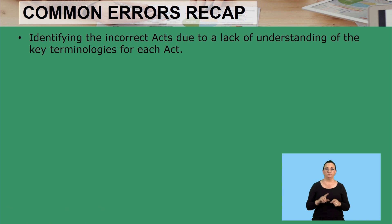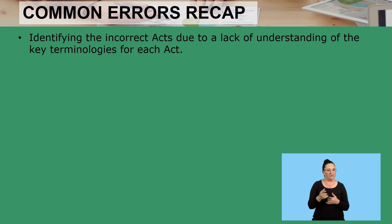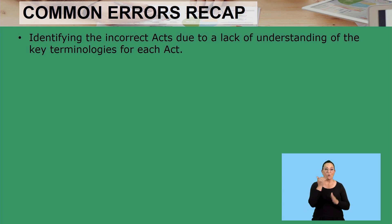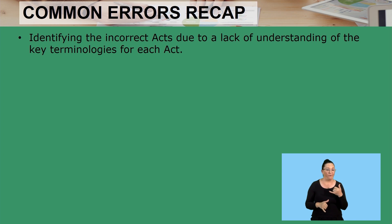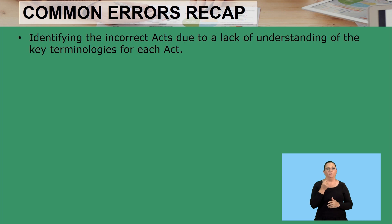In this lesson, these are the common errors that learners make, so you need to try and avoid them. Identifying the incorrect act due to a lack of understanding of the key terminologies for each act is a common mistake. Remember, you need to first look at your keywords. Once you understand the purpose of an act, it will be very easy for you to identify acts correctly. But if you do not understand the purpose, then it becomes difficult and you will incorrectly identify the act.